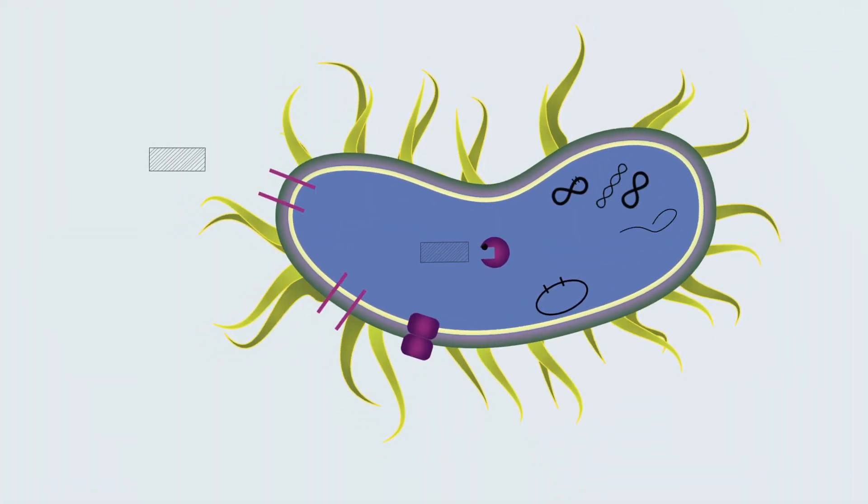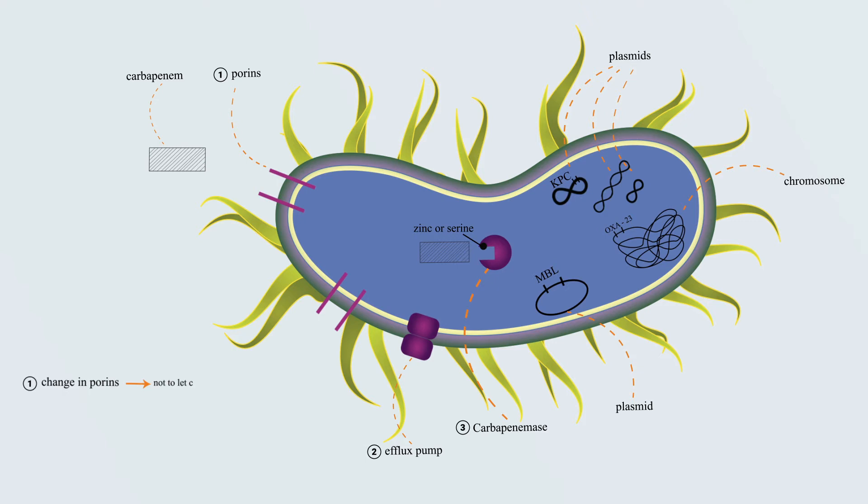This picture clarifies the presence of resistance genes on plasmids or chromosome. Also other mechanisms of resistance to carbapenems are illustrated, that is change in porins, so not to let carbapenems into the bacilli, and efflux pumps that throw the carbapenems out of the cells, and finally, the production of carbapenemase.